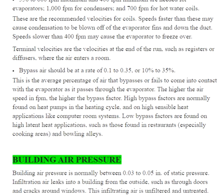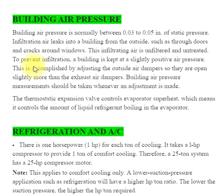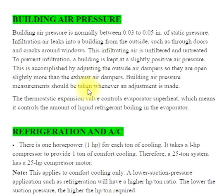Building air pressure is normally between 0.03 to 0.05 inches of static pressure. Infiltration air leaks into a building from the outside, such as through doors and cracks around windows, and this infiltrating air is unfiltered and untreated. To prevent infiltration, a building is kept at a slightly positive air pressure by adjusting the outside air dampers so they are open slightly more than the exhaust air dampers. Building air pressure measurements should be taken whenever an adjustment is made.